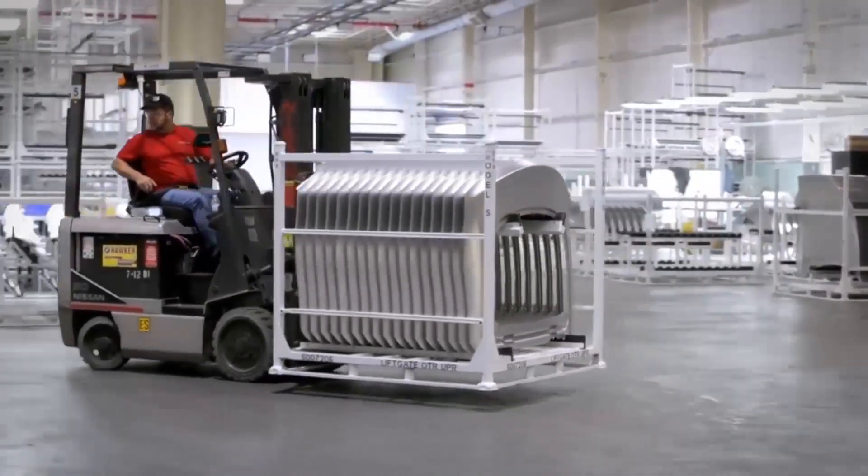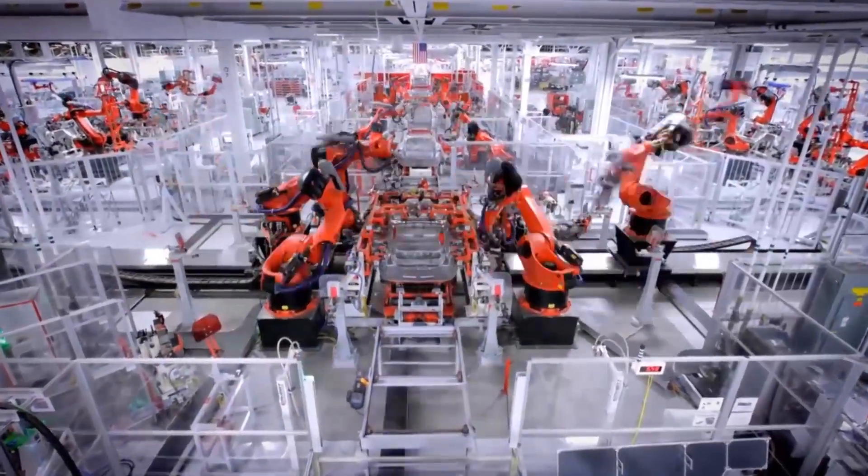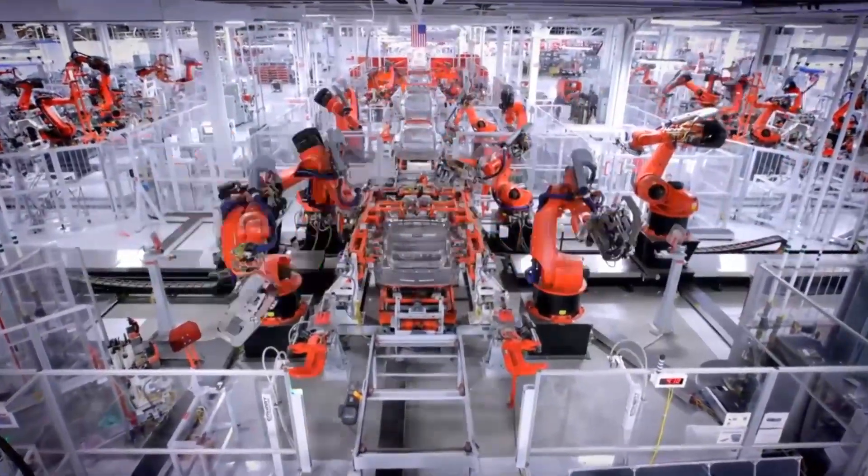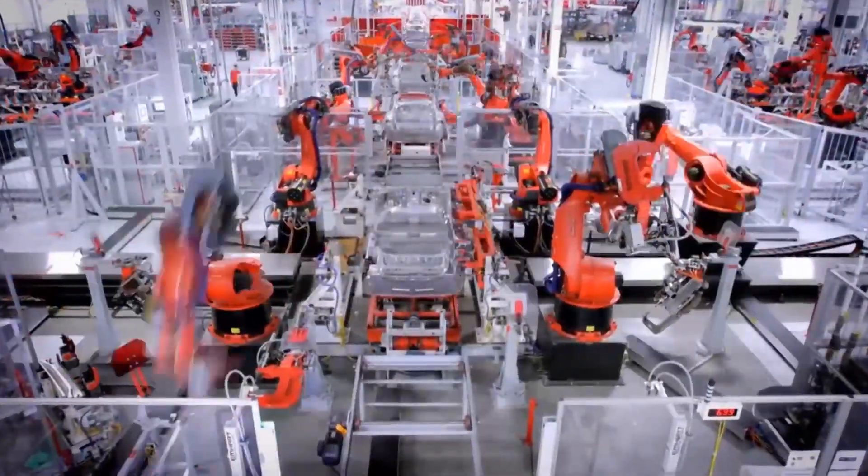Tesla is apparently using a to-be-announced upgrade of Google Glass to help improve its productivity at its factory in Fremont, California. The system could also be crucial to Tesla's goals for its massive battery factory currently under construction in Nevada.